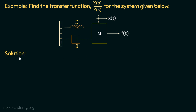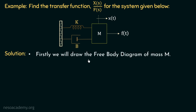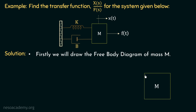The basic approach to solve such problems is to draw the free body diagram of mass M. The free body diagram is a graphical illustration which is used to visualize the applied forces and the resulting reactions on a body in a given condition. So in this case, we need to draw the free body diagram of this mass M. Let us consider this body of mass M separately, and now we will analyze the forces applied and their reactions on this body.